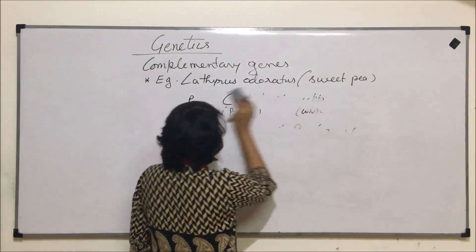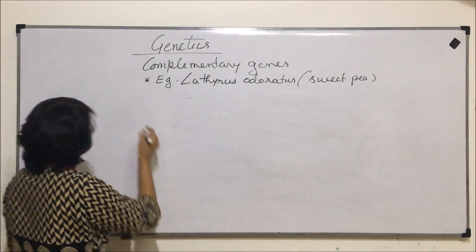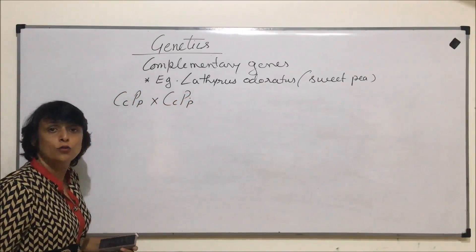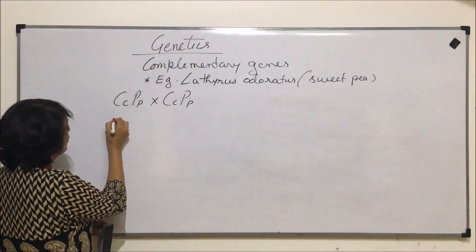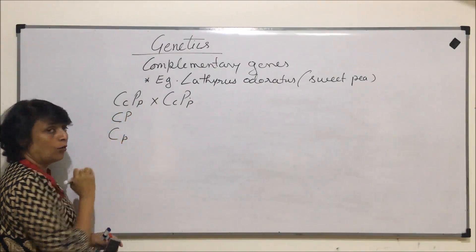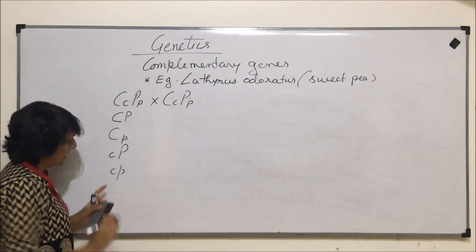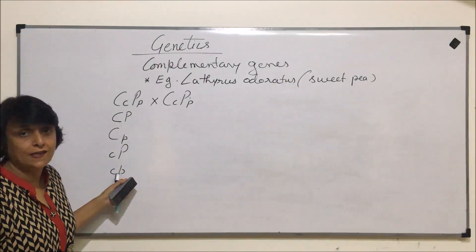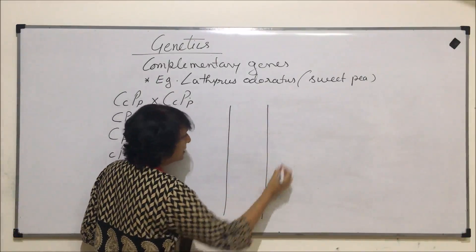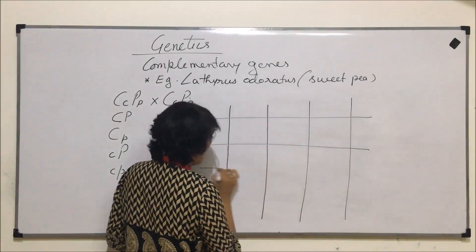When F1 members are selfed, we want to see the F2 ratio. Selfing the heterozygous F1 plants produces four types of gametes: CP, Cp, cP, and cp. Both parents produce the same gametes, giving us a Punnett square with 16 possible offspring combinations.